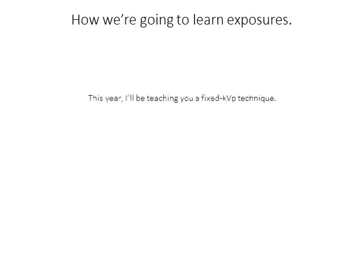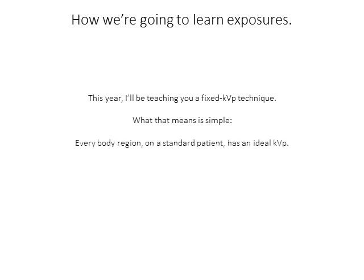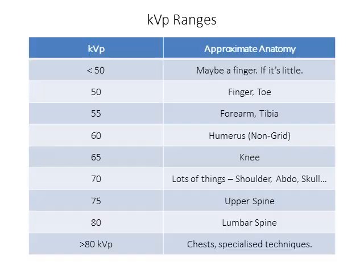We're going to learn exposures using a fixed KVP technique, meaning that every single body region on a standard normal-sized patient has an ideal KVP. A table provides approximate KVP ranges for particular parts of anatomy.